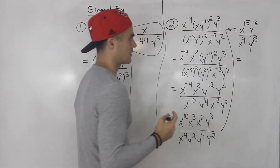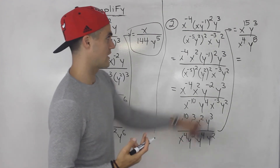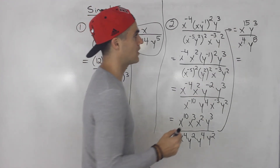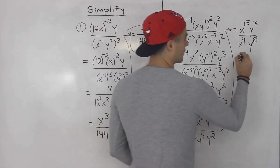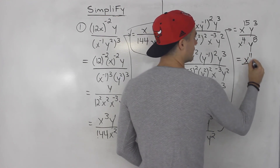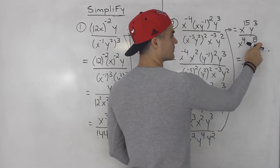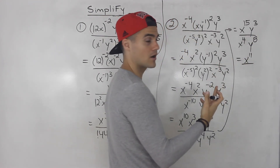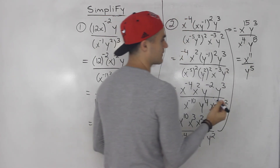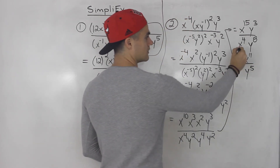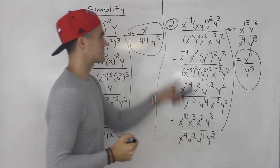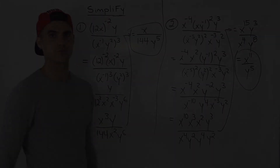From here it's pretty easy to simplify. There are 15 x's at the top and four x's on the bottom, meaning there are 11 x's left at the top. There are three y's at the top and eight y's at the bottom — after we cancel out, we're left with five y's at the bottom. So that is the final answer for number two.